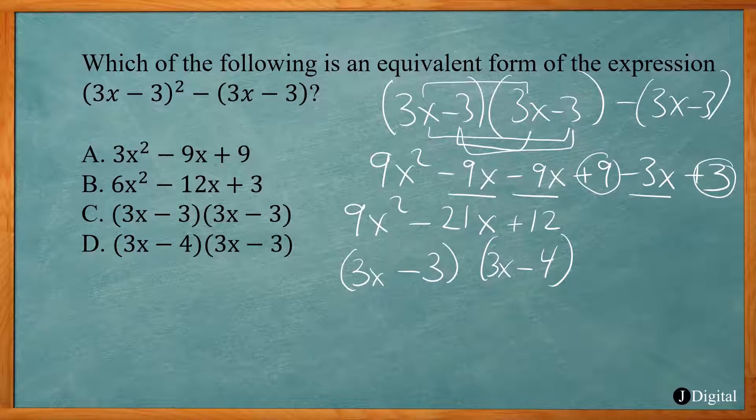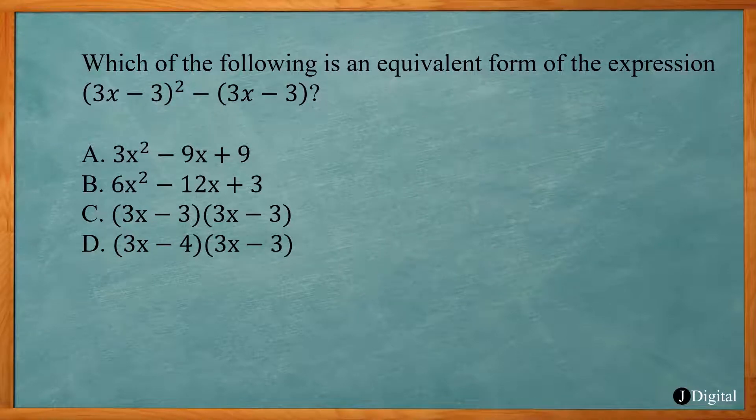But there's a much quicker way to solve this. So watch this. The fastest way to solve this is to recognize that both of these have a (3x - 3) in common, and you can factor that out. So that gives me (3x - 3).